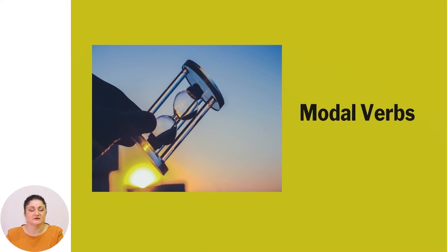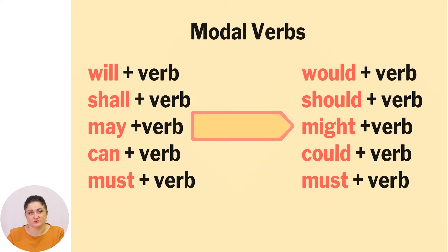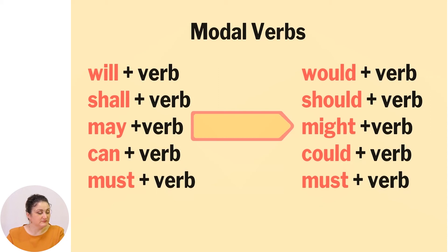The last type of verbs we are going to speak about today are modal verbs. You can see on your screen the changes that happen. Future 'will' plus the verb changes into 'would' plus the verb. 'Shall' plus the verb transforms into 'should' plus the verb. 'May' plus the verb changes into 'might' plus the verb. 'Can' plus the verb changes into 'could' plus the verb. And 'must' plus the verb remains the same — or we can change it with 'had to' plus the verb.